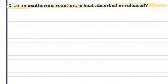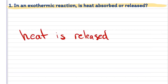First question asks: what happens in an exothermic reaction? Is heat going to be absorbed or is it going to be released? Well, exo meaning out and thermal meaning heat, that's going to tell us that heat is going to be released. We can usually detect these changes with a thermometer by feeling the surroundings and seeing if they become hotter.